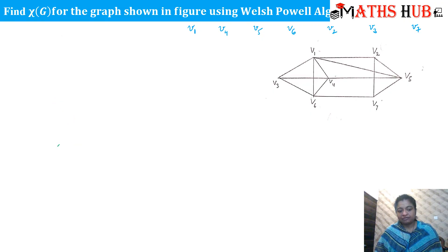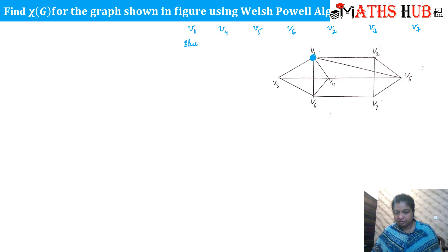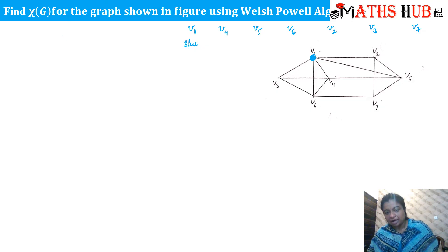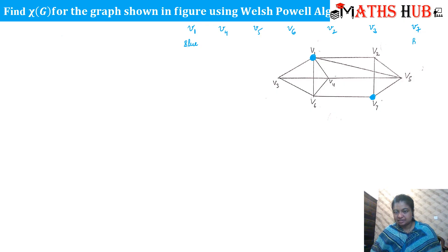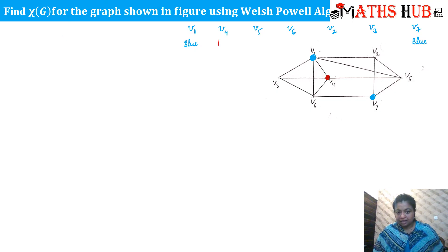According to the Welsh-Powell algorithm, we start with the first vertex in the list. V1 is first, so we mark it with blue. With V1 colored blue, we see that V3, V4, V6, V5, and V2 cannot be marked blue. However, V7 can be marked blue, so V7 is colored blue. Next in the list is V4, so we choose red for V4. With V4 marked red, V3, V6, and V5 cannot be marked red. But V2 can be marked red, so V2 is colored red.